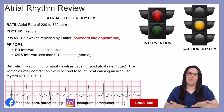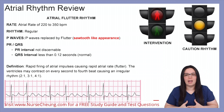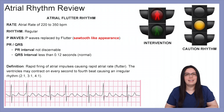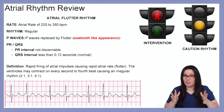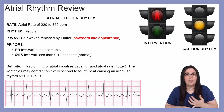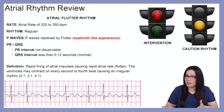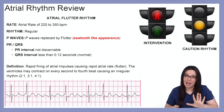Before we begin, I want you to take a look up here on the right side of your screen. You're going to see two different sets of stoplights. Our first set tells us about our rhythm — is it a good rhythm, one we should be cautious about, or is it a lethal rhythm? Our next one is either a green person letting us know we can keep going, or red — stop, we need to do something about this before it gets worse.